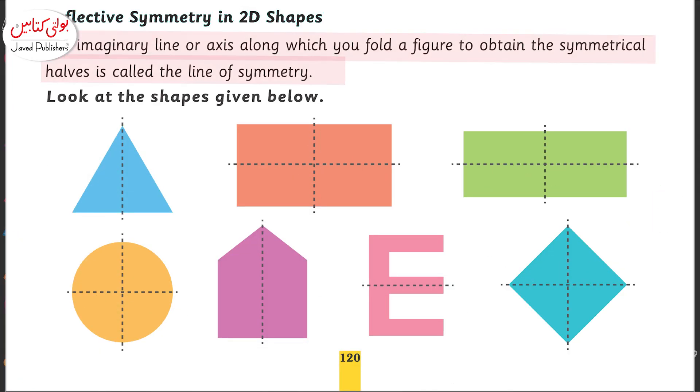We see reflective symmetry in two-dimensional shapes. The imaginary line or axis along which you fold a figure to obtain the symmetrical halves is called a line of symmetry.